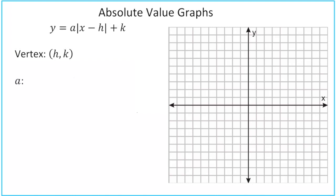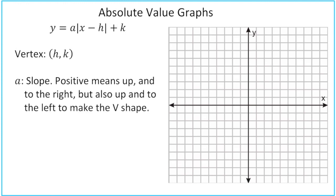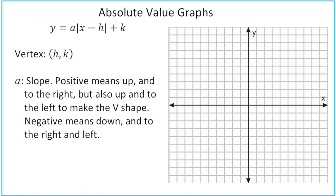The a value can be thought of as the slope of our line. Just like graphing lines, a positive a means you go up and to the right — but that gives you only one side. You also go to the left to make the V shape. For a negative a, you're going down and to the right, and also down and to the left.